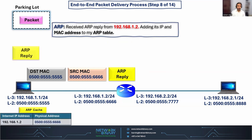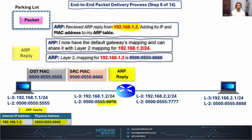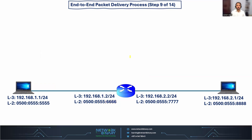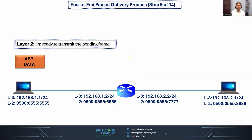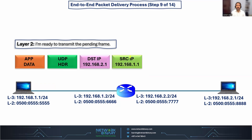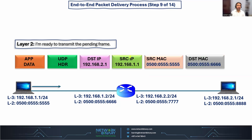ARP adds the gateway IP address 1.2 and its MAC address into the ARP cache table. Now it contacts layer 2 and says: I have resolved the MAC address — you can now transmit the pending frame. Layer 2 says: I'm ready to transmit the pending frame. So we have the full encapsulation: the application header, the UDP header, the network layer IPv4 header with source IP 1.1 and destination IP 2.1, and the layer 2 header with source and destination MAC addresses. Now the sender transmits the pending frame toward the router.